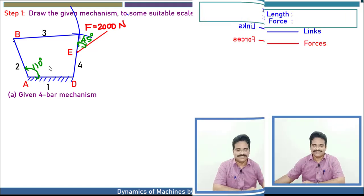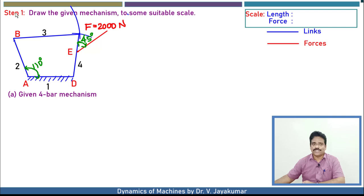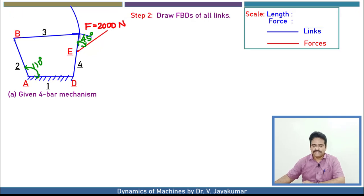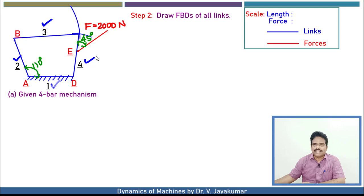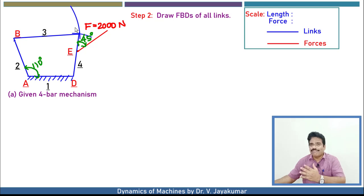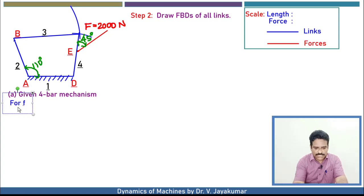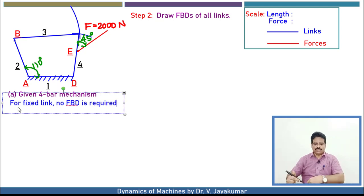Step number one is done. Now let us go on to step number two. Step number two says we need to draw a free body diagram of all links. We have four links: fixed link one, crank link two, coupler link three, and output link four which we call the rocker. For the fixed link, no free body diagram is required.